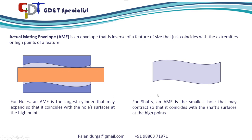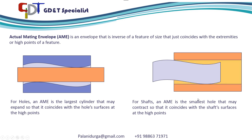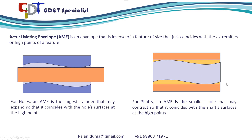Similarly, for shafts, the actual mating envelope is the smallest hole that may contract so that it coincides with the shaft surface at the high points. Here, this is the smallest hole which can enter into the shaft by touching the high points of the shaft. So this hole diameter is the actual mating envelope for the shaft.